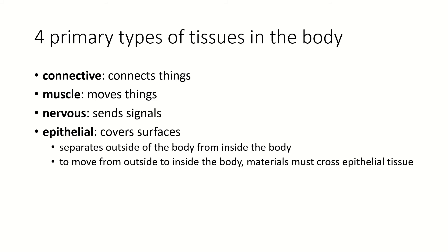There are four primary types of tissues in the body. We're going to very quickly go over these. We're going to spend a lot of time with connective and epithelial tissues, and then later we'll go into more detail on muscle and nervous. I'm going to introduce them today, but we'll talk in much more detail about them later.